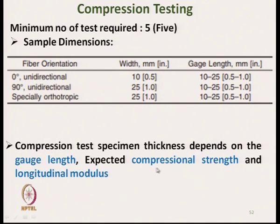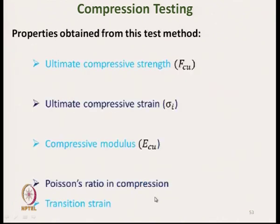Compression test specimen thickness depends on the gauge length, expected compressional strength, and the longitudinal modulus. The properties obtained during compressional testing are ultimate compressive strength, ultimate compressive strain, compressive modulus, Poisson's ratio in compression, and transition strain.